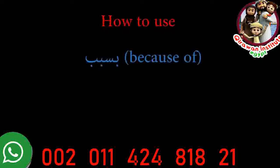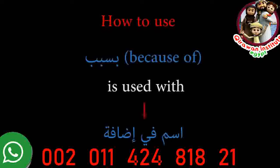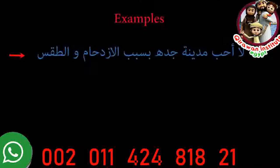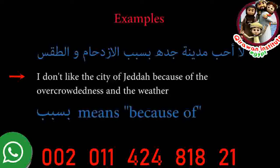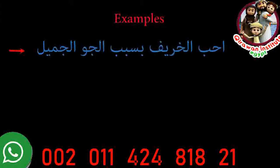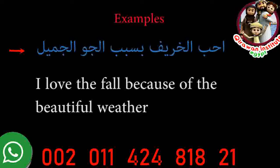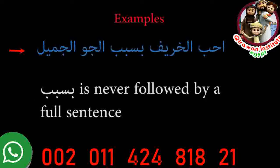Now let's look at how we use bisabab. Bisabab means 'because of.' It's used to give a one-word explanation. Bisabab is used with ism fi'idafa. For example: 'I don't like the city of Jiddah because of the overcrowdedness and the weather.' Remember that when you use bisabab, it's never followed by a full sentence.